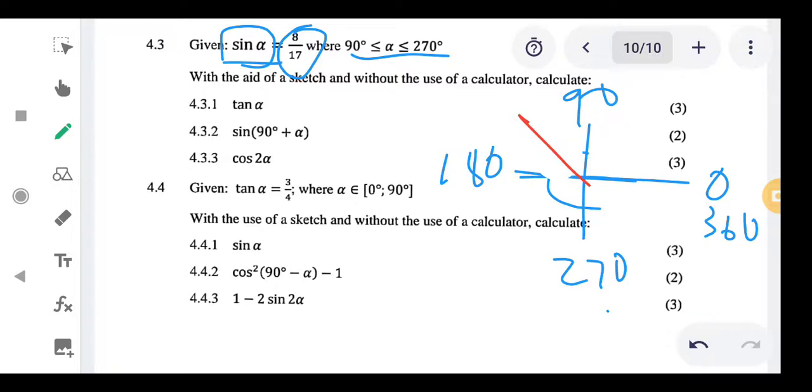Now if we draw our diagram, our angle is always going to be measured from the positive x-axis anti-clockwise. So starting from here up until there. This is going to be your alpha.